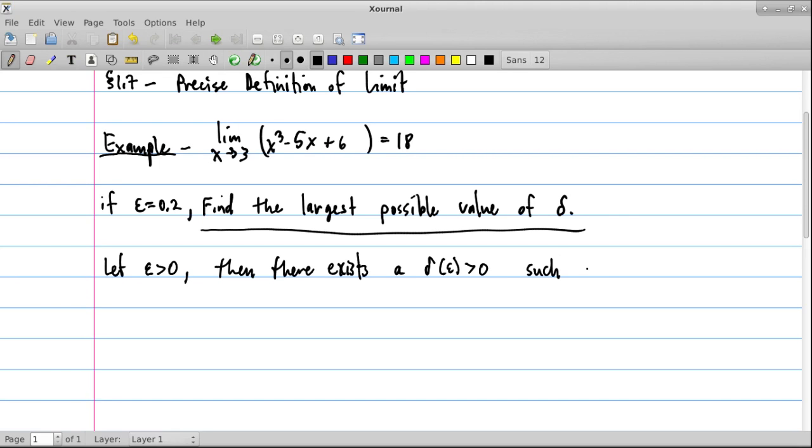Such that if x minus 3, because that's where the limit's headed, is less than delta, then the limit, the function and its limit value, so x cubed minus 5x plus 6 minus 18 should be less than epsilon.